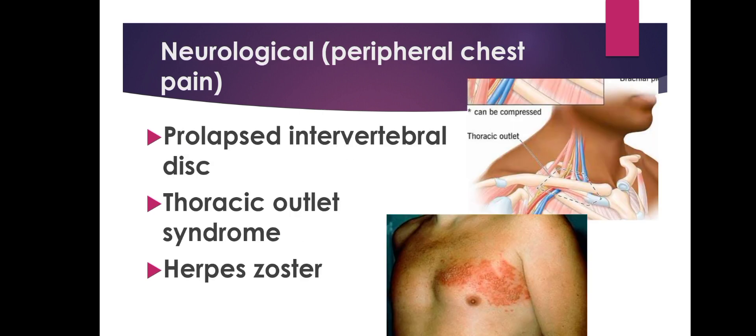Neurological causes for peripheral chest pain can be caused by prolapsed intervertebral discs or thoracic outlet syndrome. In thoracic outlet syndrome, there is compression of the arteries, veins, and nerves coming out of the thoracic cavity into the neck. Herpes zoster can also cause peripheral chest pain and is associated with a dermatomal rash.